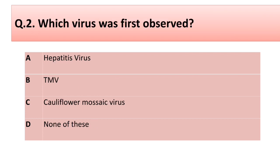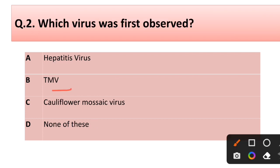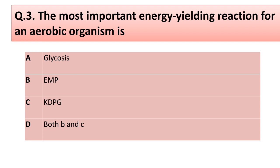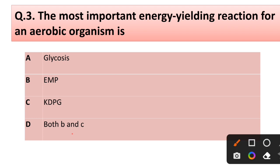Question number two: which virus was first observed? Options: hepatitis virus, TMV virus, cauliflower mosaic virus, none of these. Correct answer is option B: TMV virus. Question number three: the most important energy-yielding reaction for an aerobic organism is — options: (a) glycolysis, (b) glycolysis EMP, (c) KDPG...